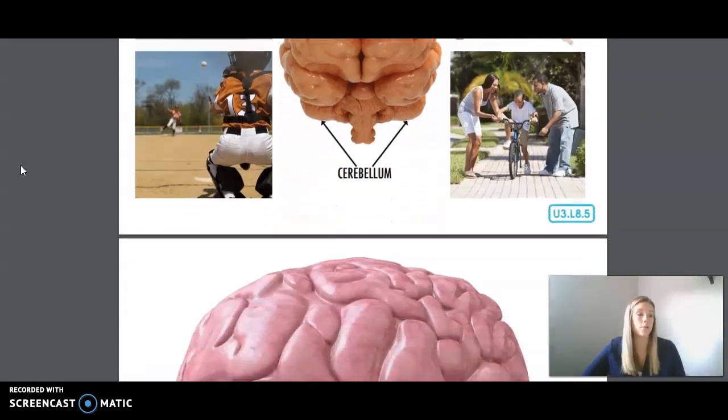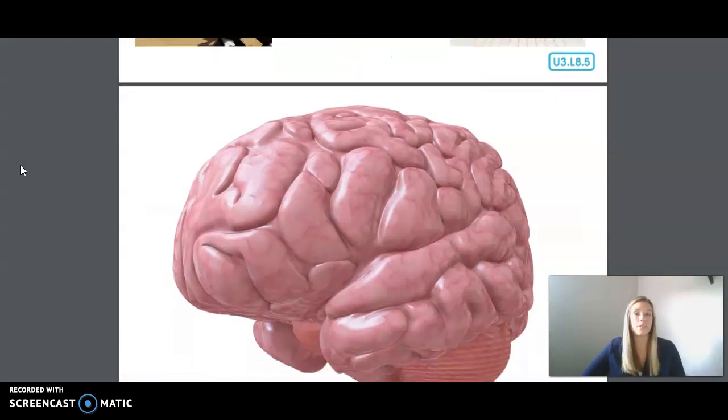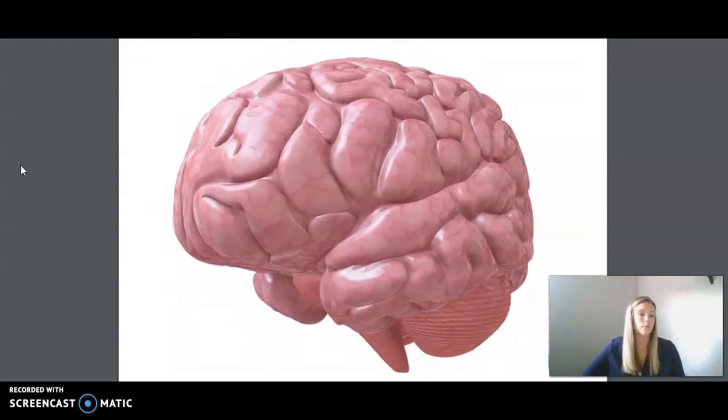Now let's put all the parts of your brain together. Look at this picture of the brain. See if you can identify the three parts. The brain stem, the cerebrum, and the cerebellum.